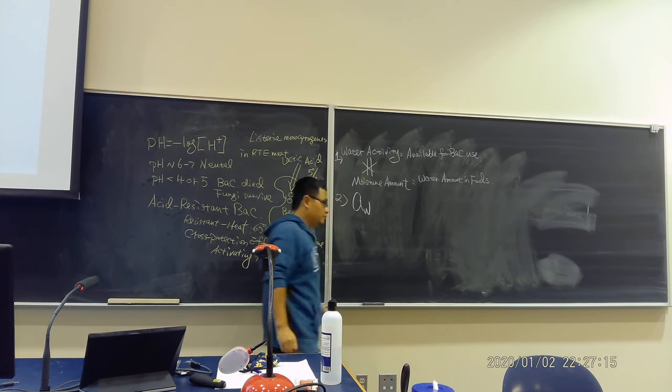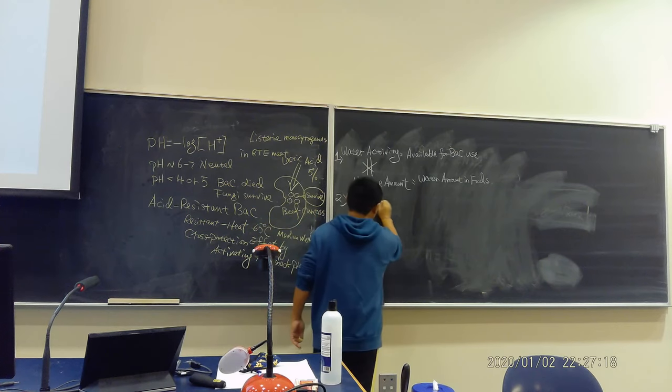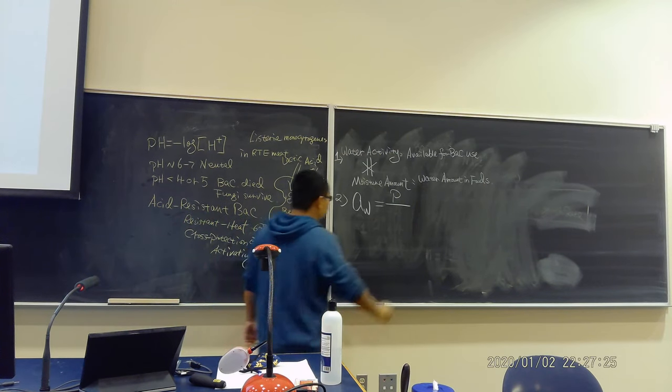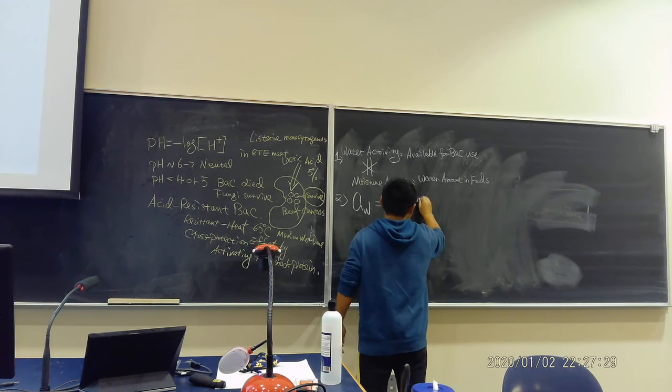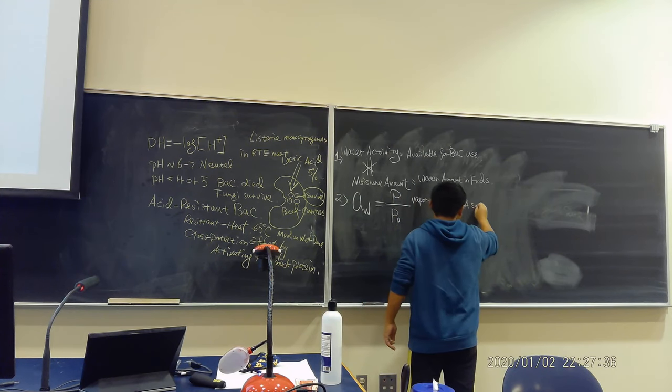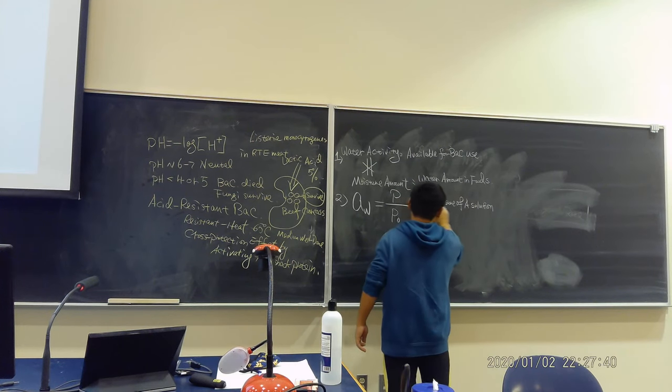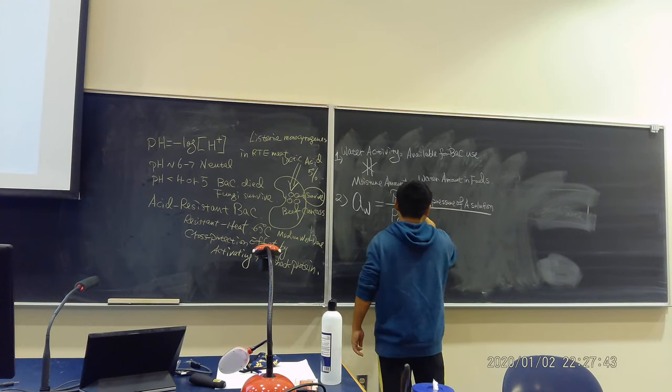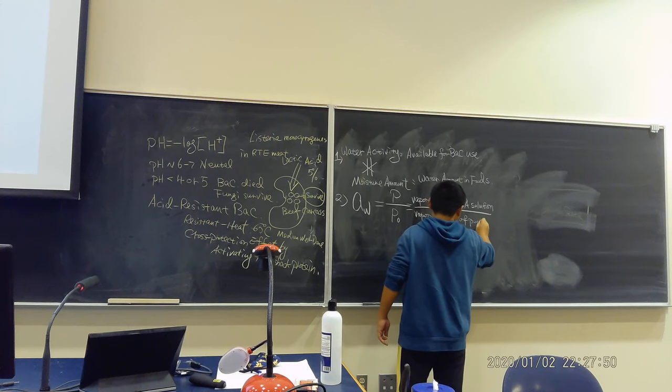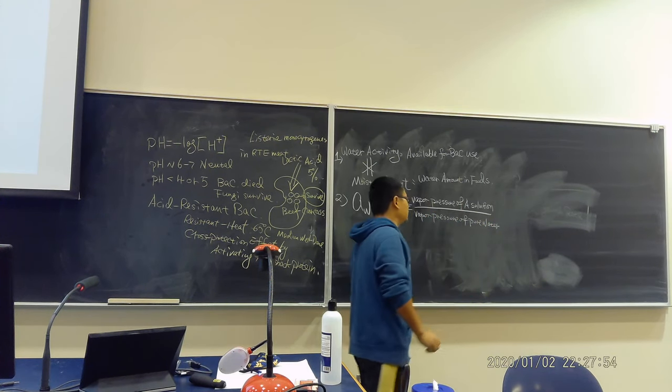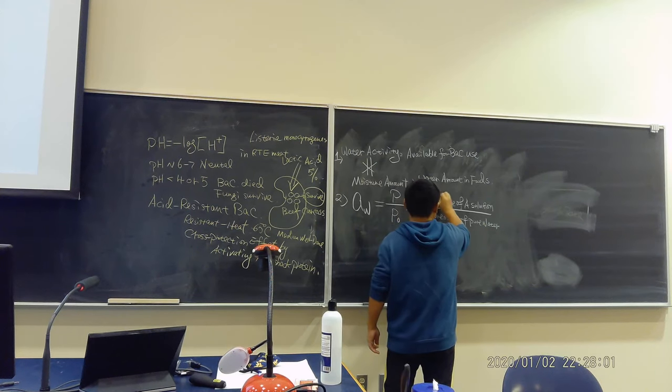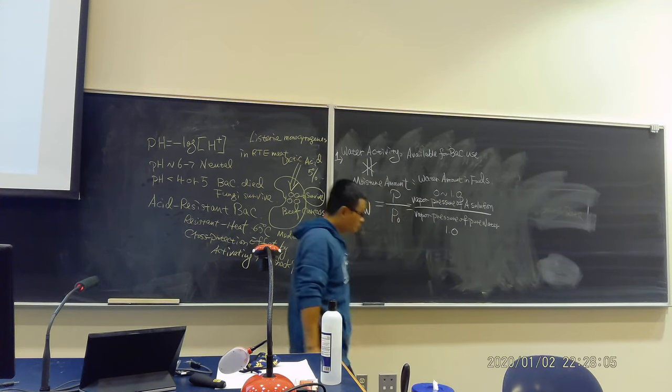Second, how we test water activity. We are using Aw to denote the water activity. P divided by P0. That means vapor pressure of a solution divided by vapor pressure of pure water. Now, the vapor pressure of pure water is always 1.0. The vapor pressure of a solution is always between 0 and 1.0.